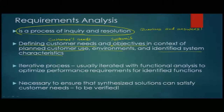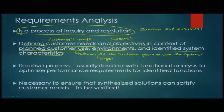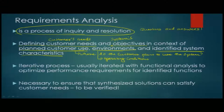The customer's needs and the system's objectives are defined in the context of planned customer use — where the customer plans to use the system. This is one aspect. The planned customer usage, the environment, which we can think of as operating conditions, and then identified system characteristics — certain specific characteristics of the system identified as part of the customer needs and objectives. We will cover system characteristics identification in detail using the UAV case study.